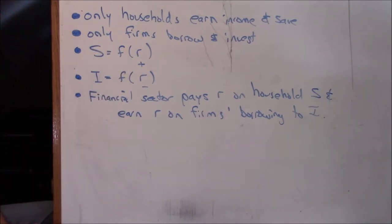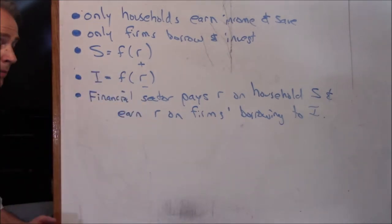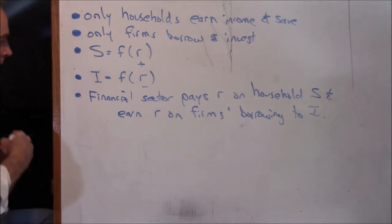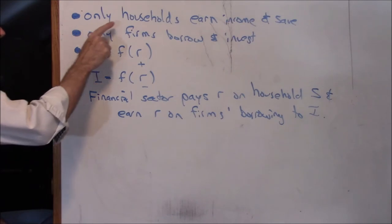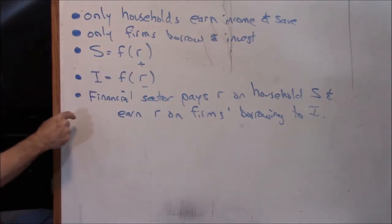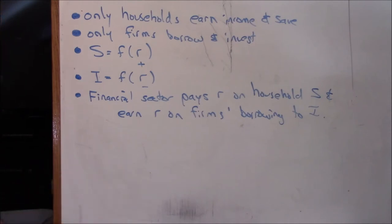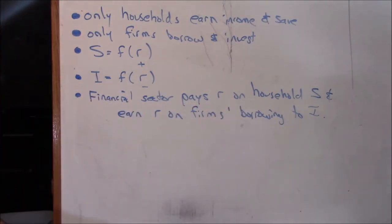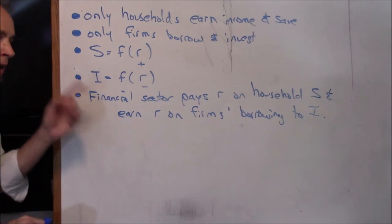There are some simplifying assumptions, which is always true — the real world is too complicated to model exactly as it is. Here's what's going on: banks are trying to attract enough household saving to have the money in their vaults to loan out to firms for investment. One of their goals is to not have money just sitting in the vault, because they're paying interest on those savings. So they have an incentive to make S equal to I.